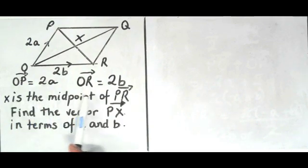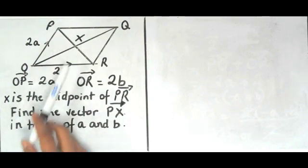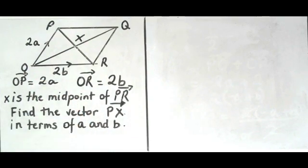It's also telling me that X is the midpoint of PR. So the line PR is here and X is the midpoint so it's right in the middle. And I need to find the vector PX. So I need to find the vector from P to X and I need to write it in terms of a and b.